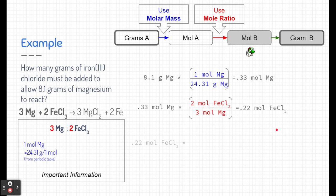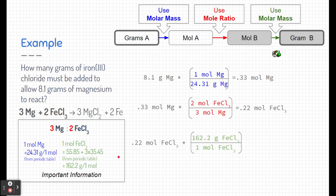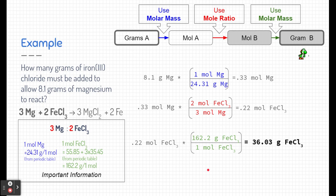Now I need one more step: converting moles of iron(III) chloride to grams. I need the molar mass of iron(III) chloride — adding up the masses of one iron and three chlorines. I plug it in with one mole on the bottom, opposite what I'm starting with. Multiplying this on the calculator gives me the answer: 36.03 grams of iron(III) chloride is how much I need to react with all the magnesium.